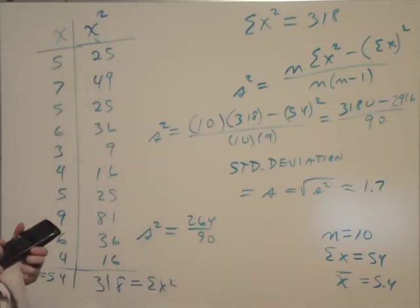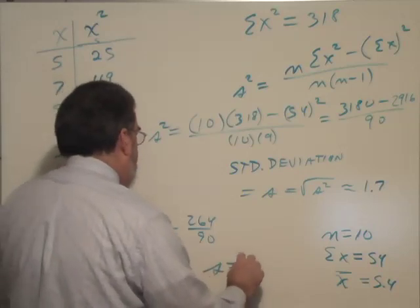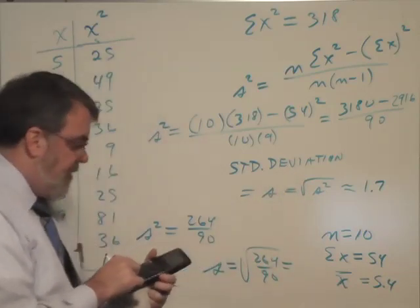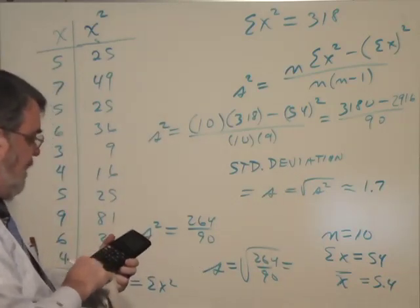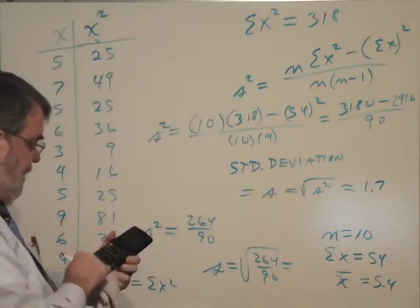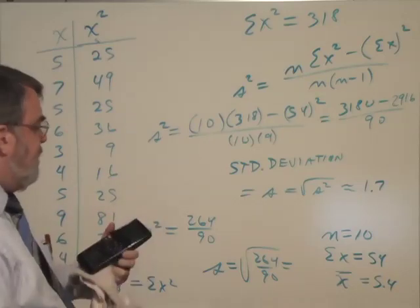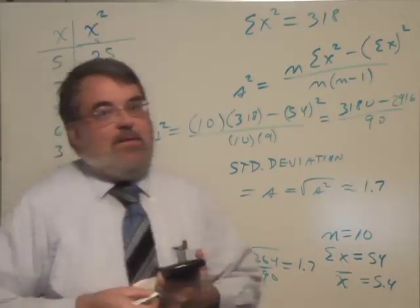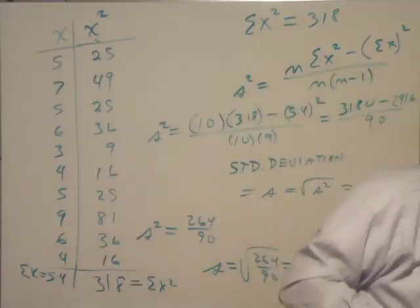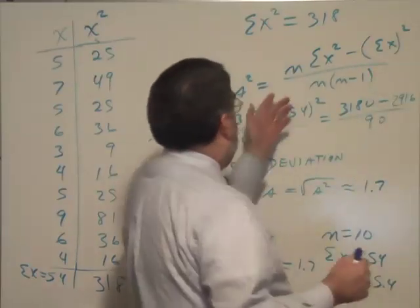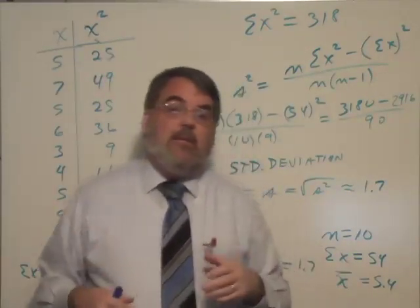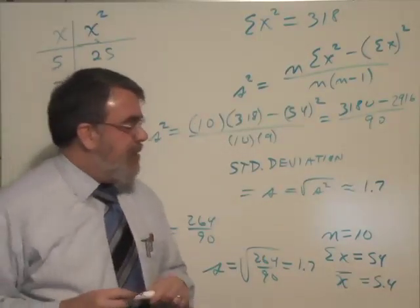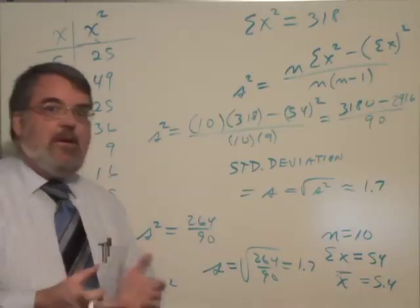And if we take the square root of that, 264 over 90, I believe we get the same 1.7. Yep. Exactly the same. 1.71 something. 1.7. So there we go. And it is the exact, exact same calculation. The formula I had earlier and this one are equivalent. It takes some algebra to go from one to the other, but it can be done. All right. So there we have the standard deviation number.